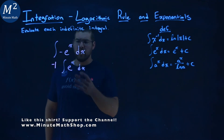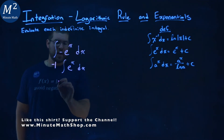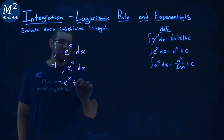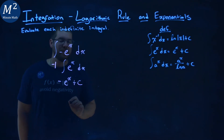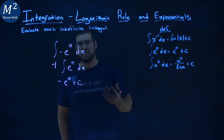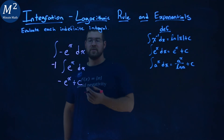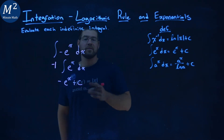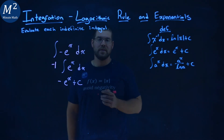So we rewrite this: the negative comes down up front, then we just have e to the x plus c. Our final answer here is negative e to the x plus c.